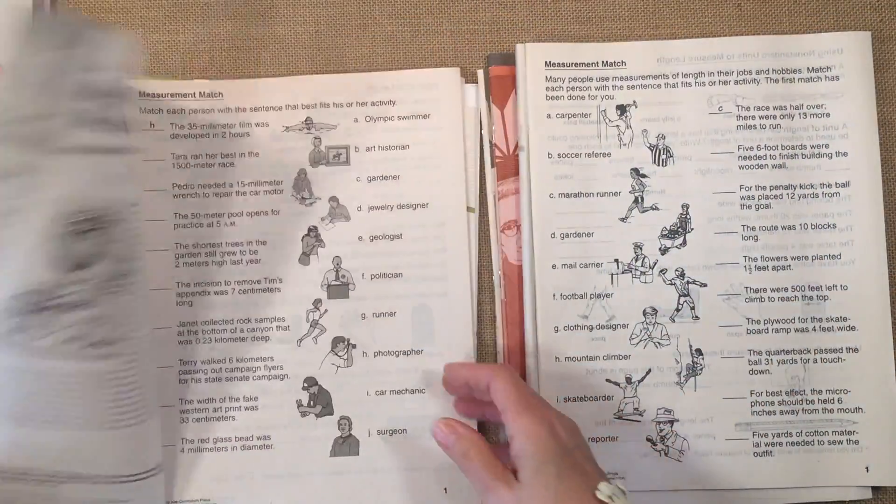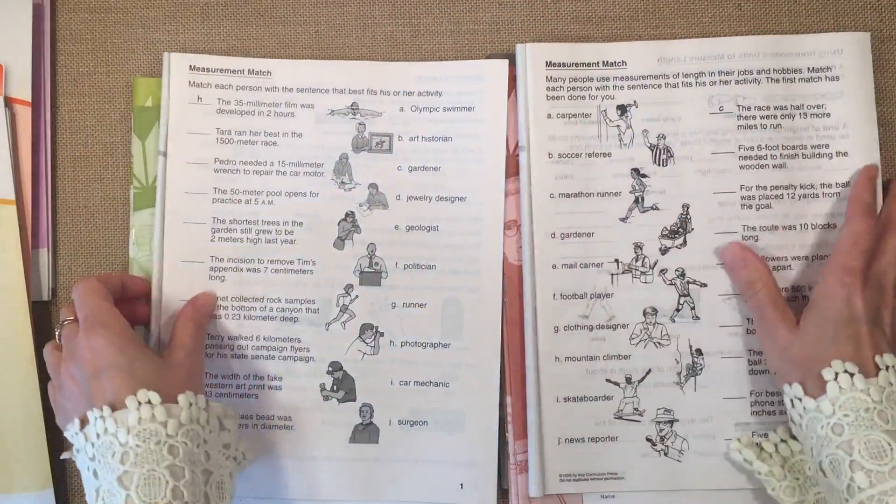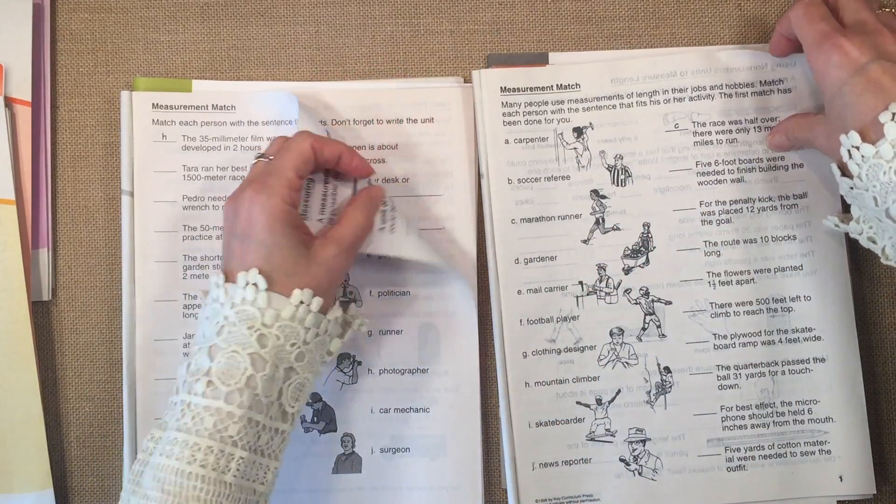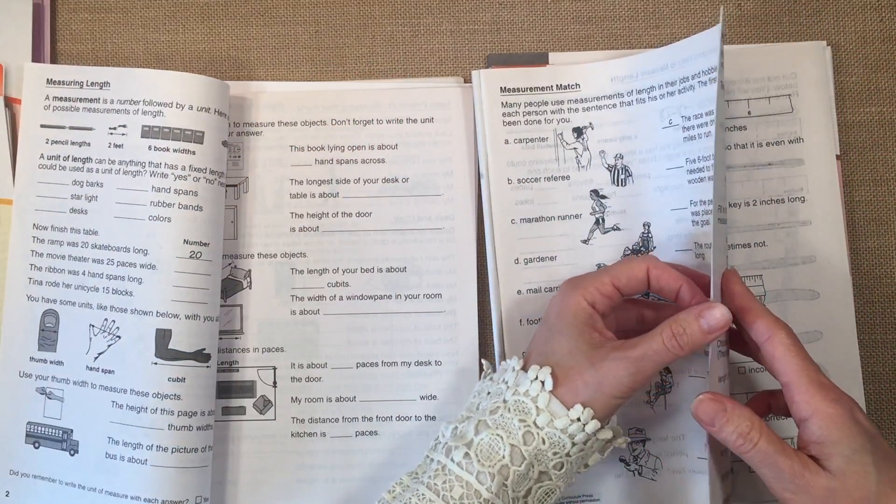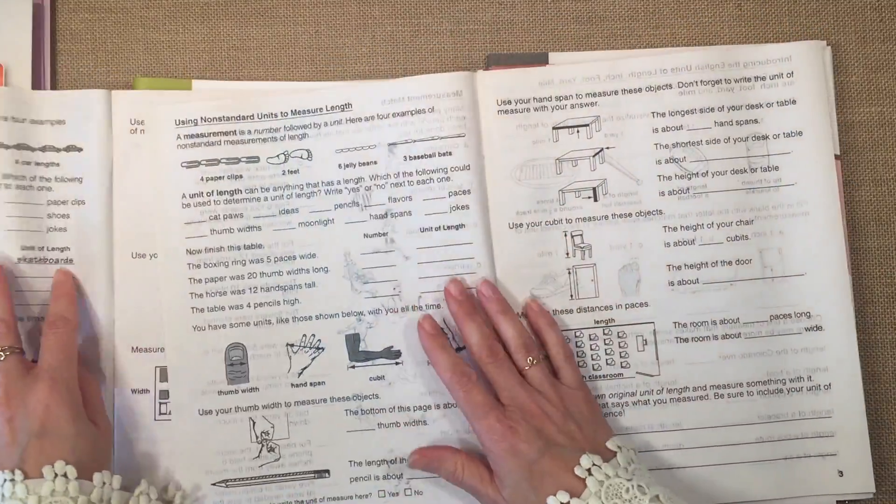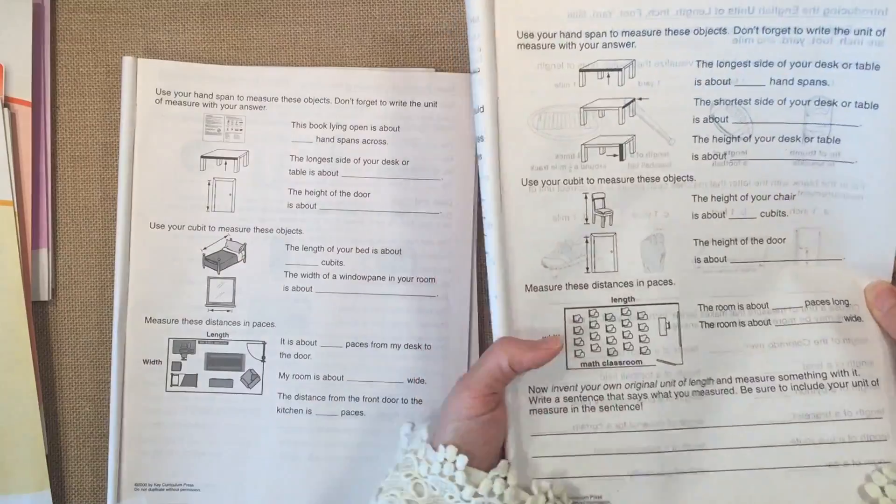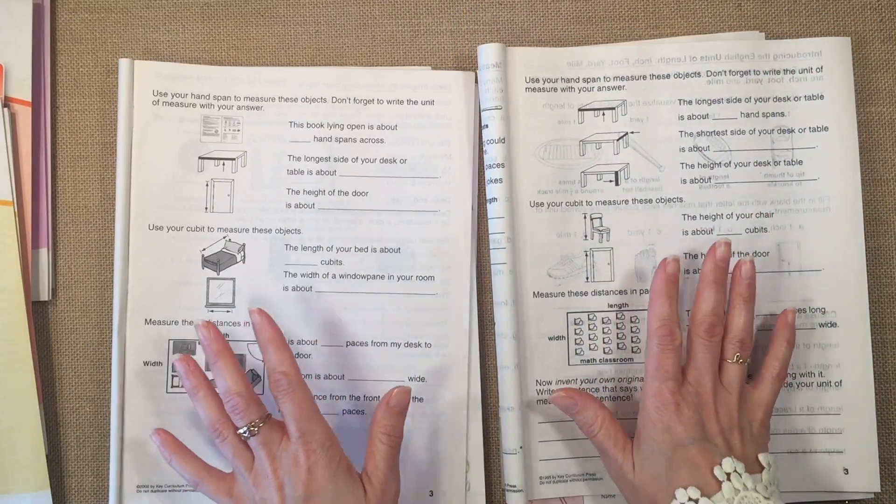If you go through the workbook, you'll find that the lessons are actually really similar. Now we went ahead and did both of these workbooks anyway, even though the material was similar. It just was good to go through both types of measurement.